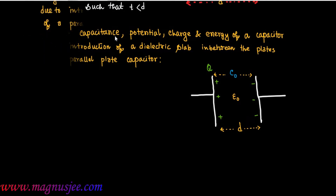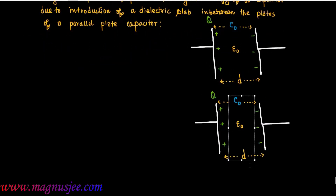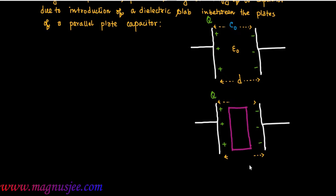Now we can draw a parallel plate capacitor with a dielectric slab introduced in between the plates. T is the thickness of this dielectric slab, K is the dielectric constant of the dielectric slab, epsilon_0 is the permittivity of vacuum, and D is the distance between the two plates.